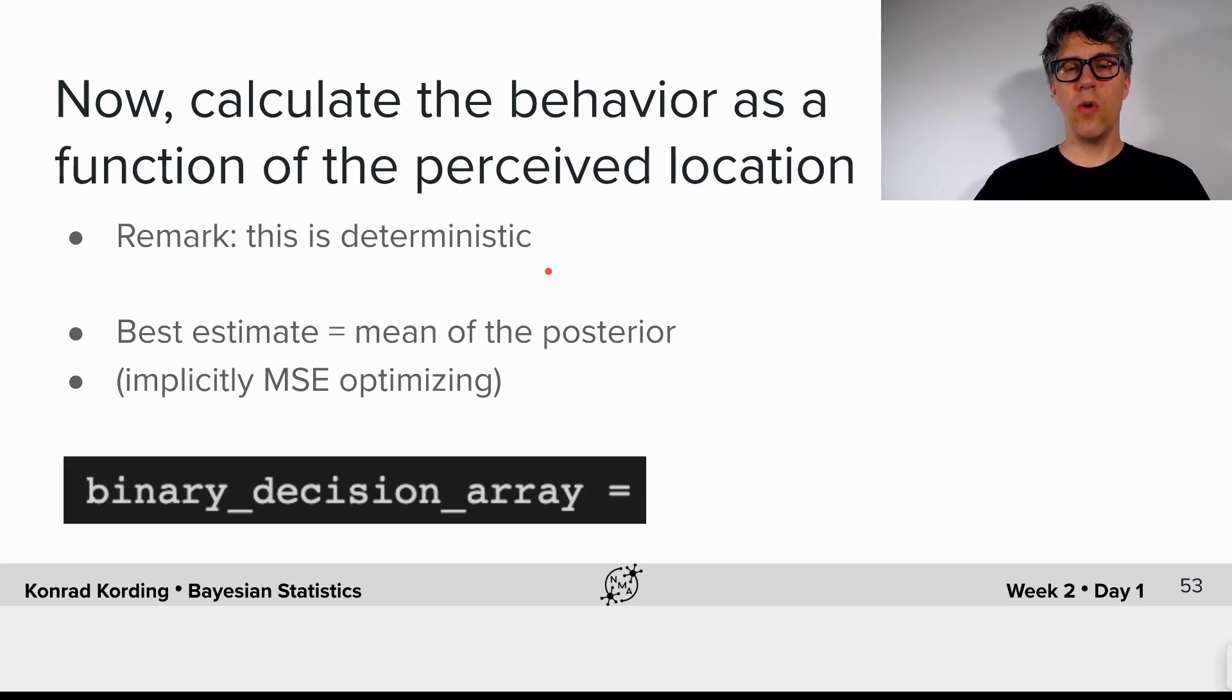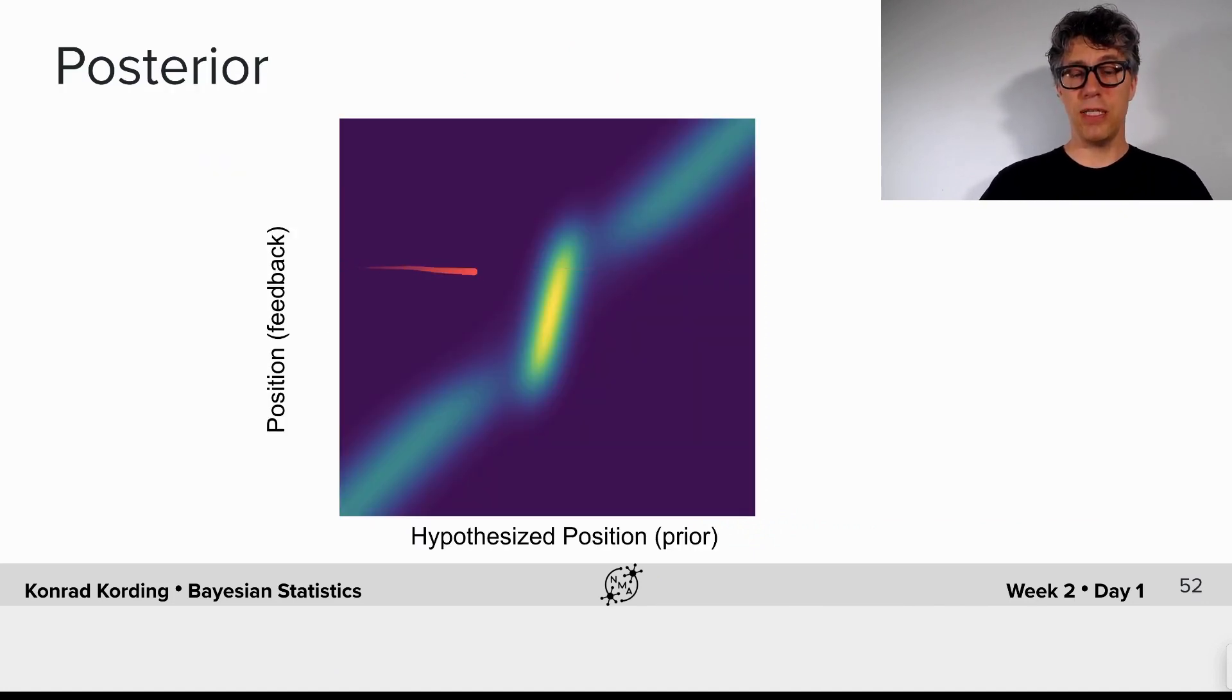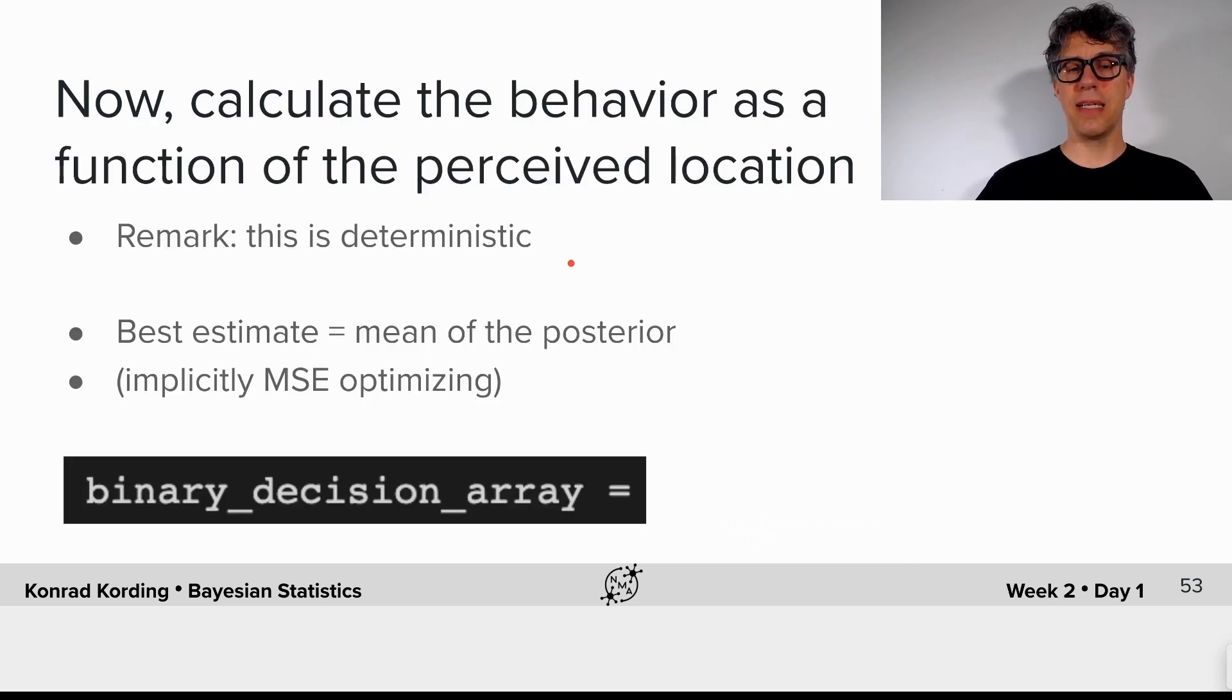So why don't you calculate that? For each row of this matrix, now we want to calculate what the mean is along that axis here, and that will give us the binary decision array. What we expect is in each line there will be one point which is the ideal estimate. If this is the x tilde, that will be given. So why don't you calculate this? Okay, so you can do this. Let's do this.